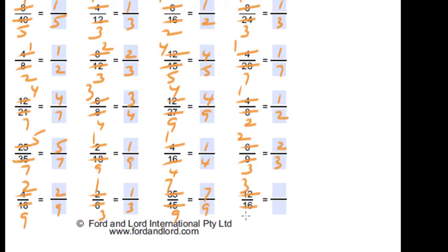5 times 7 is 35 and 5 times 9 is 45, so 7 over 9. 4 times 3 is 12 and 4 times 4 is 16, so 3 over 4. You can also download this worksheet from the website. Thank you very much.